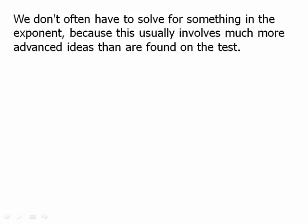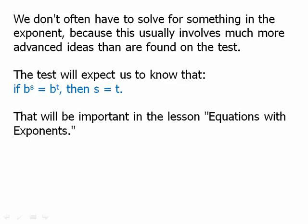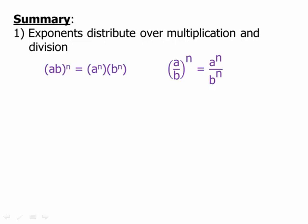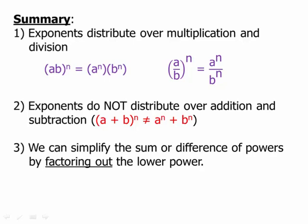We don't often have to solve for something in the exponent. The test will expect us to know that if the bases are the same — if b to the s equals b to the t — then it must mean the exponents are equal. In summary: exponents distribute over multiplication and division. Exponents do not distribute over addition or subtraction — those are very tempting mistake patterns. We can simplify sums or differences of powers by factoring out the lower power. And if the bases are equal and a to the m equals a to the n, we can equate the exponents.